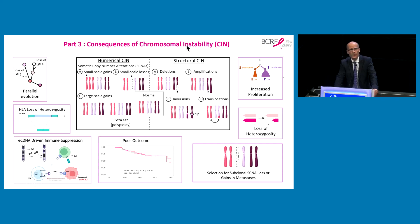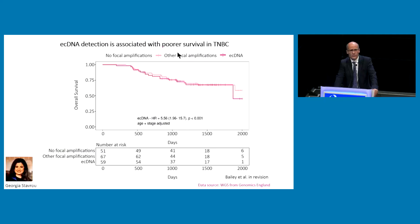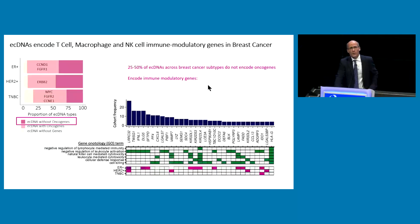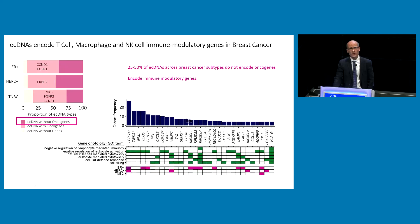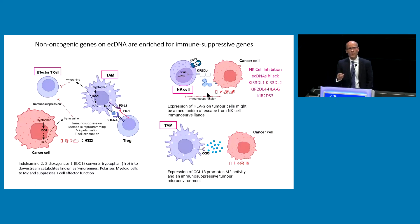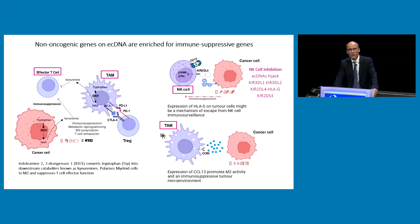What are the consequences of these genomic mechanisms driving chromosomal instability? EC-DNA in triple negative breast cancer is associated with poor outcome. These EC-DNAs don't just encode oncogenes — about half encode oncogenes, but 25% to 50% across breast cancer subtypes encode immune modulatory genes, which we don't think has been described before. These immunomodulatory genes include IDO1, CCL13, and HLAG. What do they do? They suppress effector T cells and NK cells, and polarize tumor-associated macrophages to an M2 immune-suppressive state.